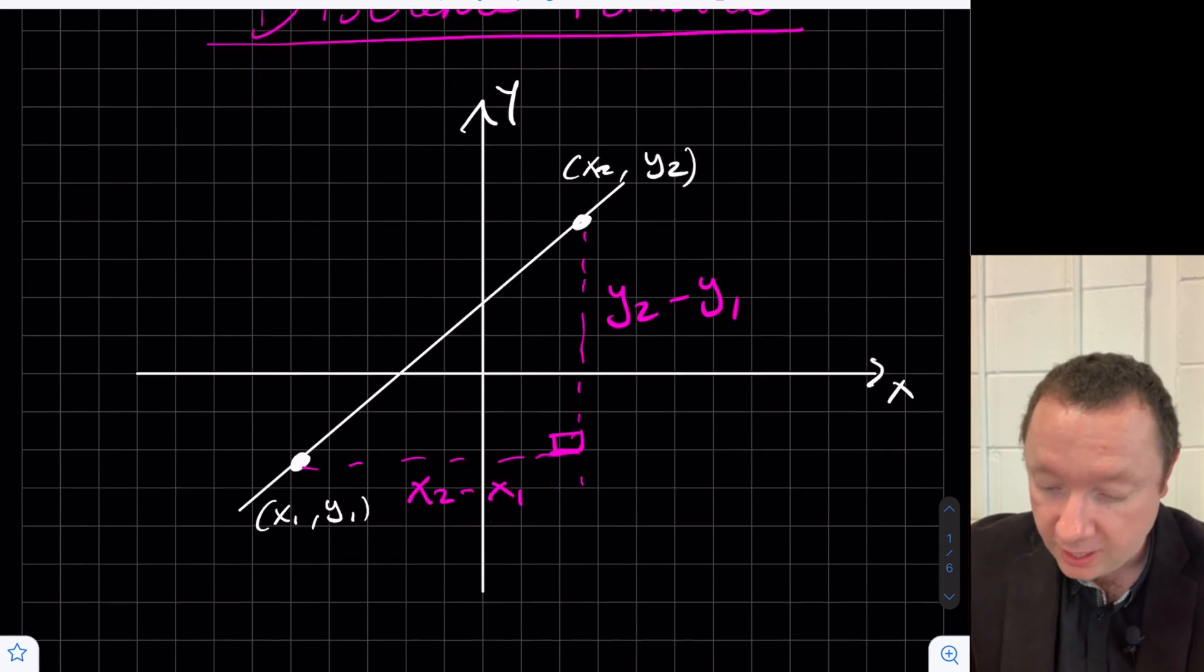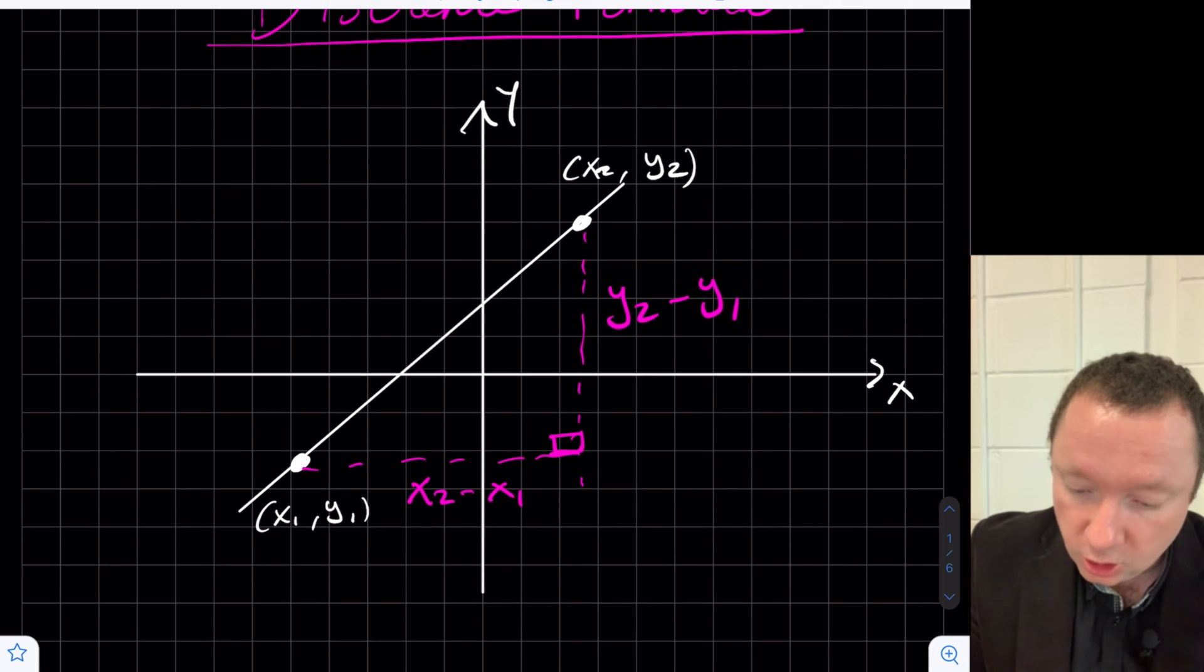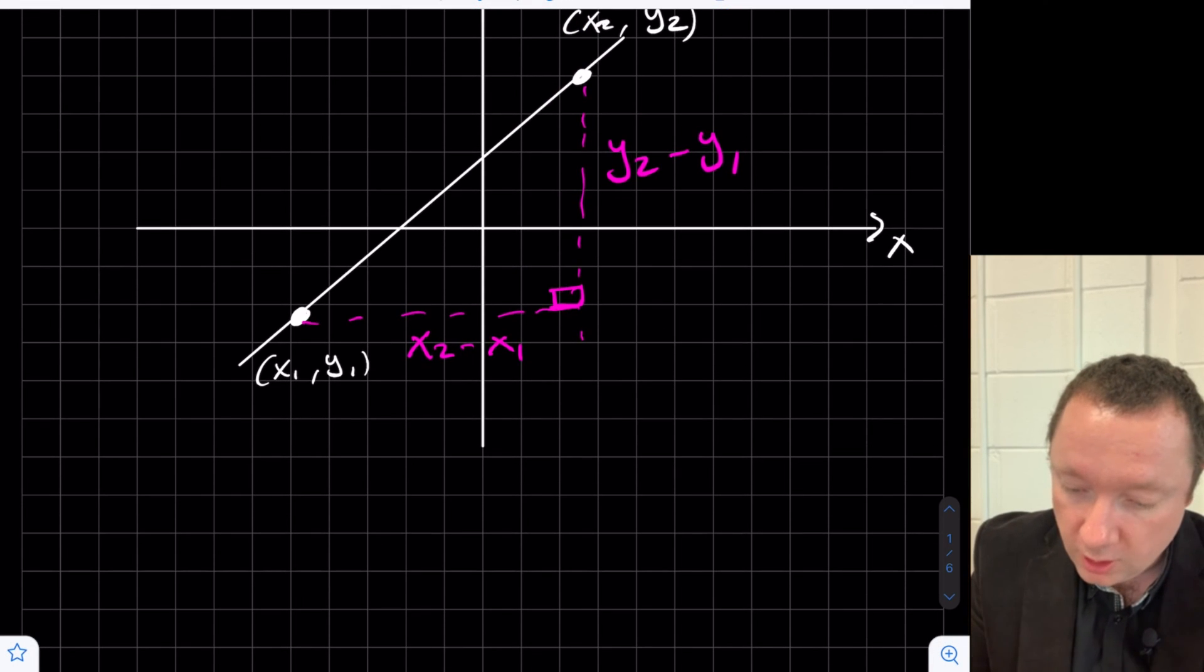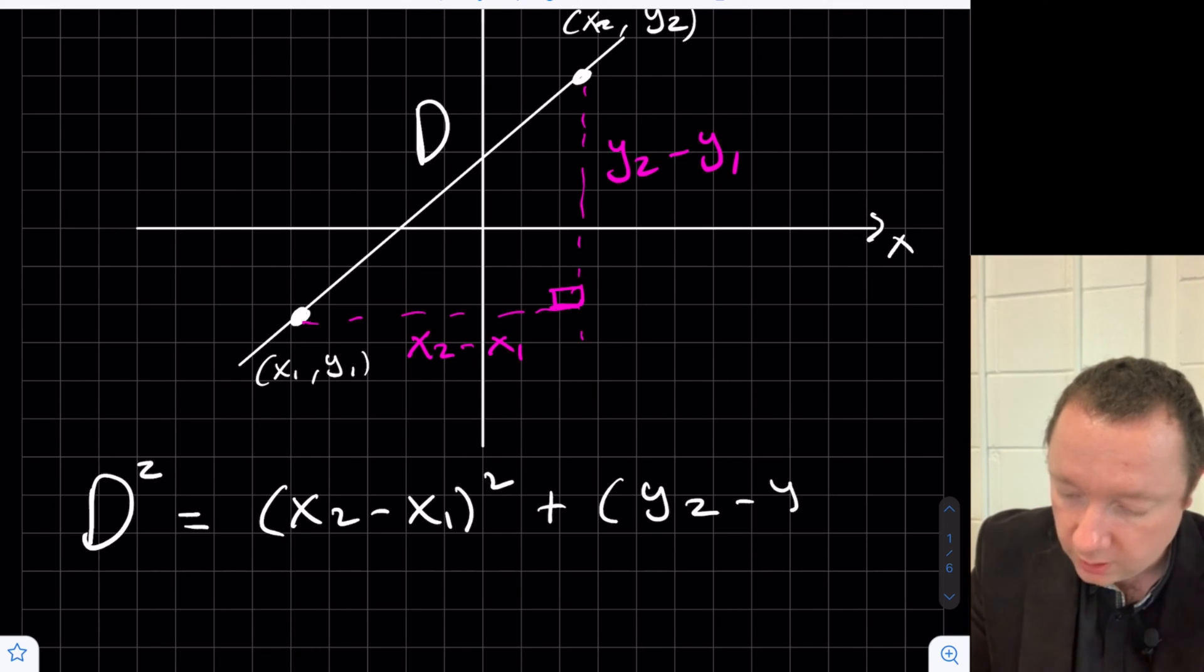the distance up the y-axis would be y2 minus y1. So by Pythagoras, we should already know from National 5 that we can do this side squared plus this side squared equals this side squared. So let's call this side d, the distance.